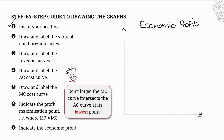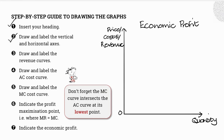Draw and label the vertical and horizontal axes. On the vertical axis we have price, costs, and revenue, and on the horizontal axis we have quantity. Now draw and label the revenue curves. In lesson two we established that the demand curve is equal to the average revenue curve, which is also equal to our marginal revenue curve.